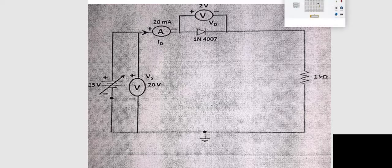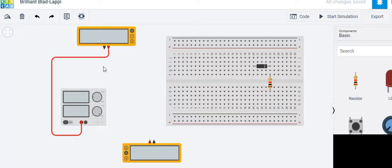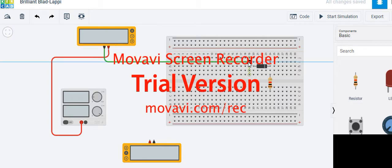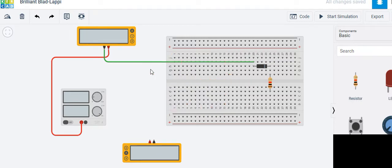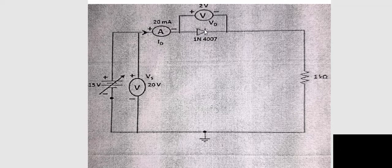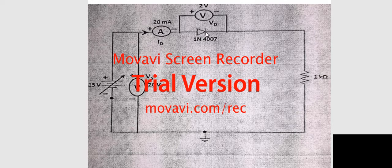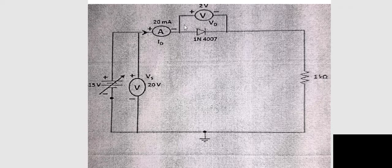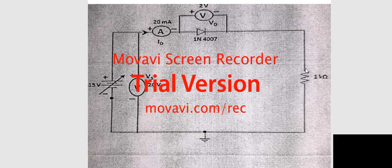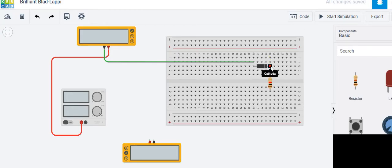Connect the negative of the ammeter to the diode, shown here in green color. From the positive end of the diode, connect to our resistor.